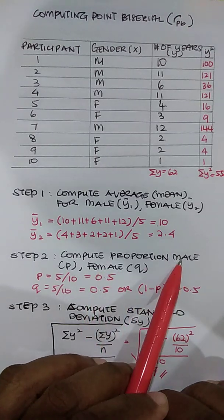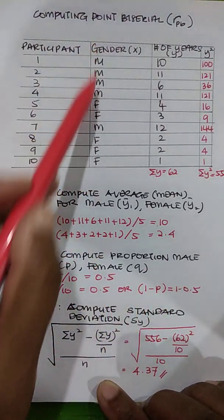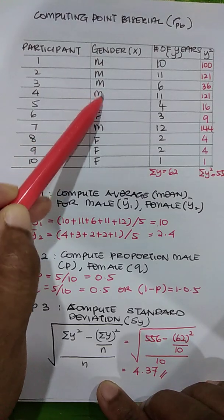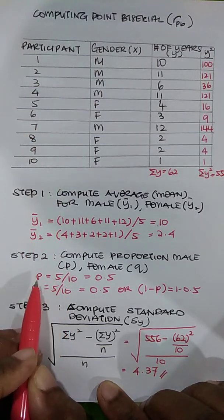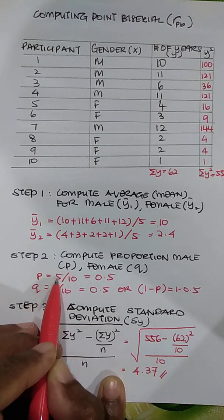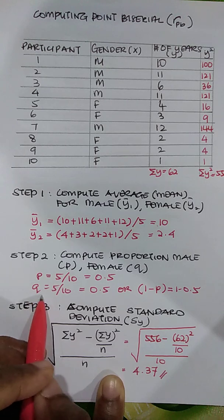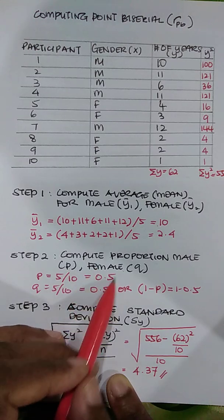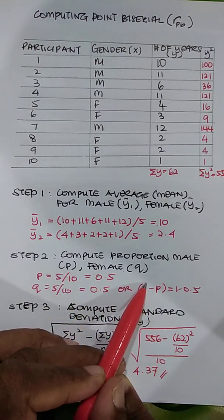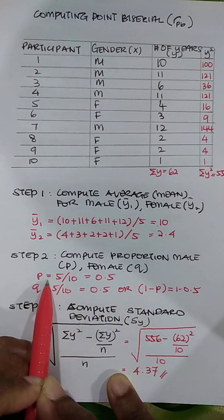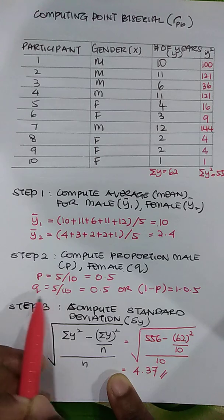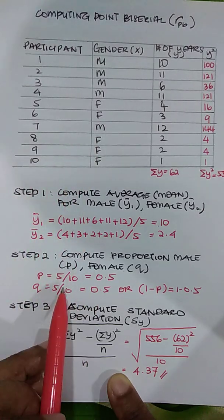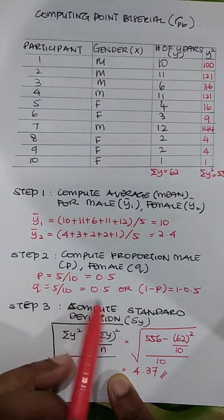The next step is to compute the proportion of males and females in your data. Out of 10 participants, there are 5 males, so p equals 5 over 10, which is 0.5. Q, the proportion for females, equals 1 minus p, which is also 0.5. You can verify this by counting 5 females divided by 10 total participants, giving 0.5. So we have equal male and female participants.